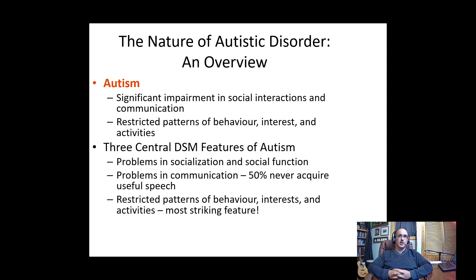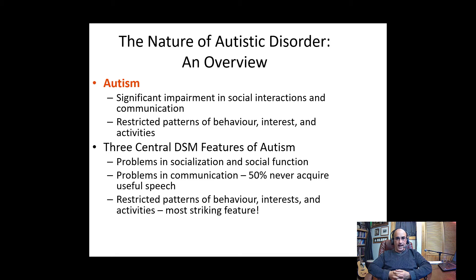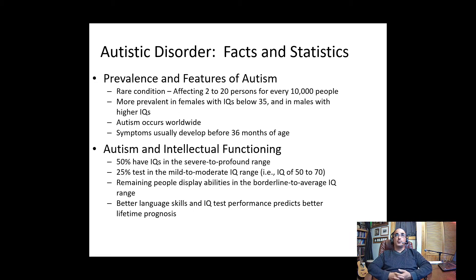The DSM focuses on socialization, social function, and communication. It notes that 50% of people with autism never acquire useful speech. It's important to recognize that many people with autism understand others and have varying degrees of comprehension. Some who don't speak at all are highly intelligent, capable individuals. Restricted patterns of behavior and interests are the most striking feature for most people. Autism is a relatively rare condition, affecting 2 to 20 people for every 10,000.